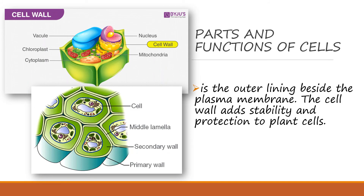We also have the cell wall. The cell wall is the outer lining beside the plasma membrane. The cell wall adds stability and protection to plant cells.